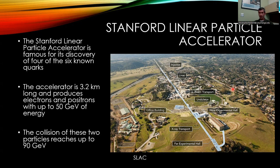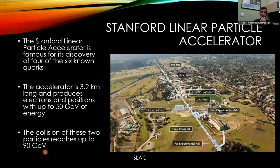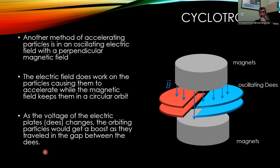At 90 giga electron volts, the wavelength would be small enough to see inside protons and neutrons. Originally SLAC accelerated only electrons, then began accelerating electrons and positrons and smashing them into one another, producing a collision energy of about 90 giga electron volts. The cyclotron was another approach to accelerating particles — instead of a line, particles are accelerated in a circle, going faster and faster.